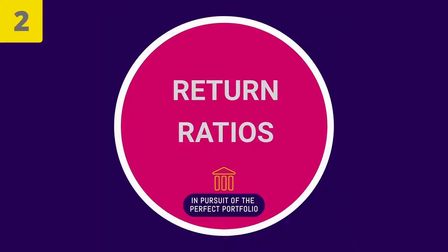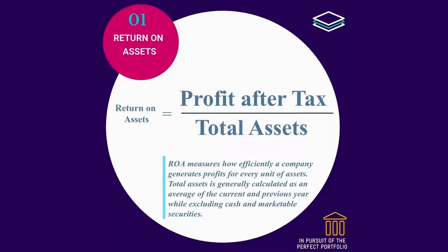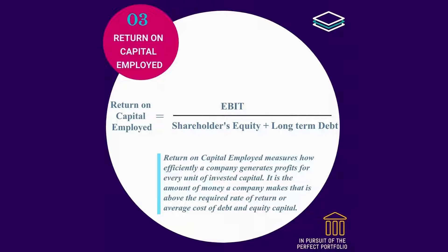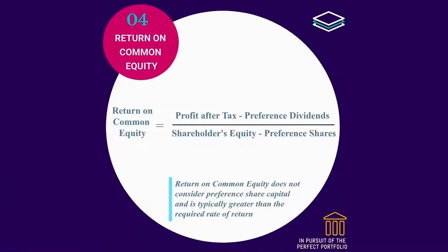Number 2: Return ratios. Return on assets is equal to profit after tax divided by total assets. It measures how efficiently a company generates profits for every unit of assets. Total assets is generally calculated as an average of the current and previous year while excluding cash and marketable securities. Return on equity is equal to profit after tax divided by shareholders' equity. It measures how efficiently a company generates profits for every unit of shareholder's equity. Return on capital employed is equal to earnings before interest and taxes divided by shareholders' equity plus long-term debt. It measures how efficiently a company generates profits for every unit of invested capital — specifically the amount of money a company makes above the required rate of return or average cost of debt and equity capital. Return on common equity is equal to profit after tax minus preference dividends, divided by shareholders' equity minus preference shares. It does not consider preference share capital and is typically greater than the required rate of return.